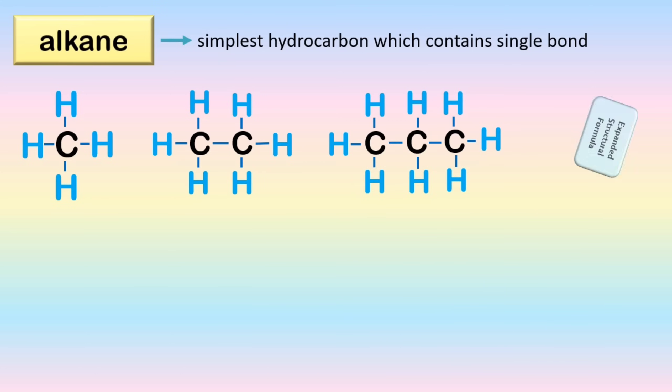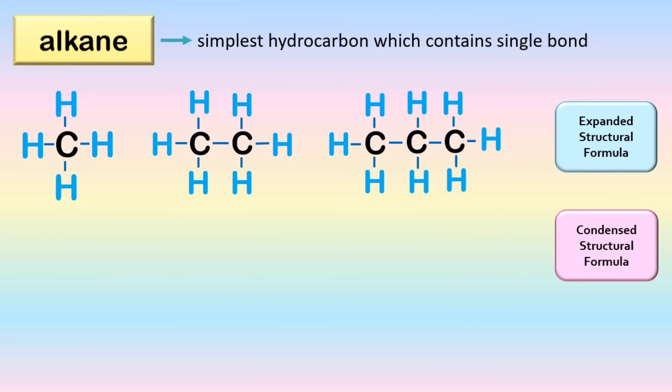This structure is what we call the expanded structural formula. Aside from this, we can also use condensed structural formula. Condensed structural formula shows the order of atoms like a structural formula but is written in a single line to save space and make it more convenient and faster to write. Condensed structural formulas are also helpful when showing that a group of atoms is connected to a single atom in a compound.